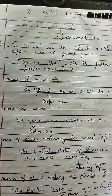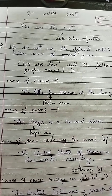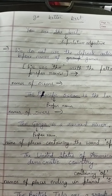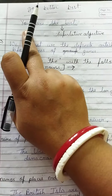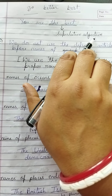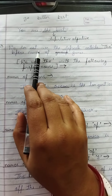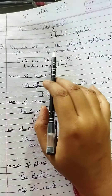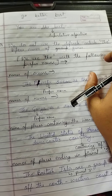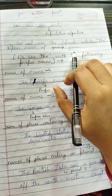See the example: 'We have a test tomorrow.' Here 'test' is mentioned for the first time, so we use 'a' before test. The next sentence: 'We want to do well in the test.' Here 'test' is mentioned the second time, so we use 'the' before test. This illustrates the rule — when something is mentioned a second time, we use 'the.'